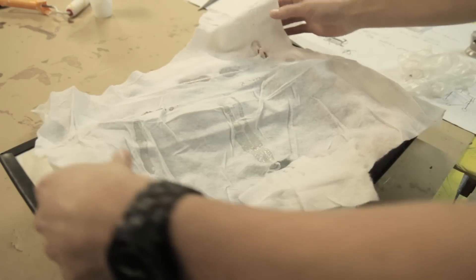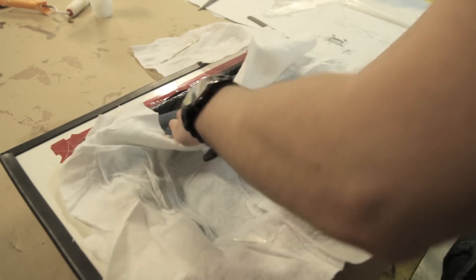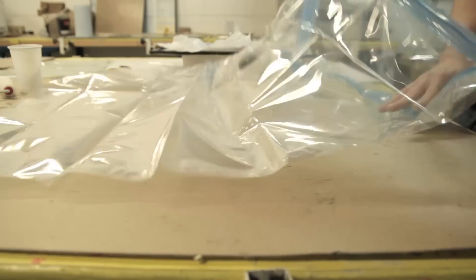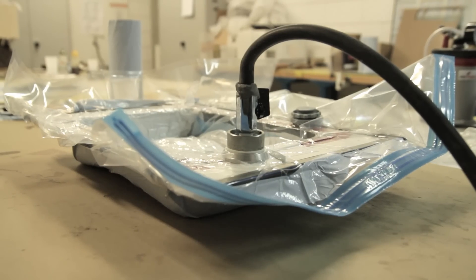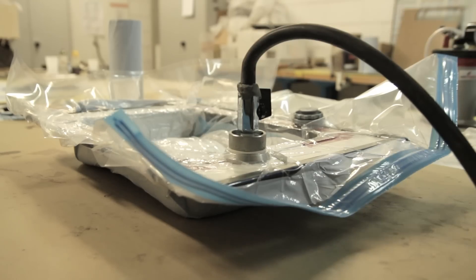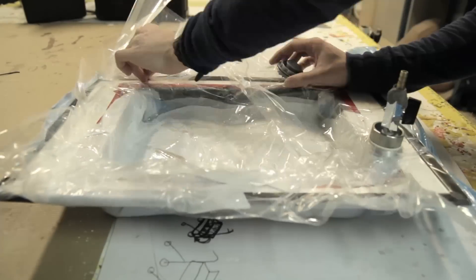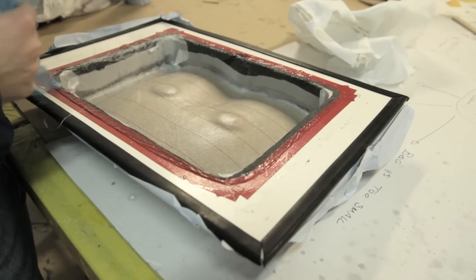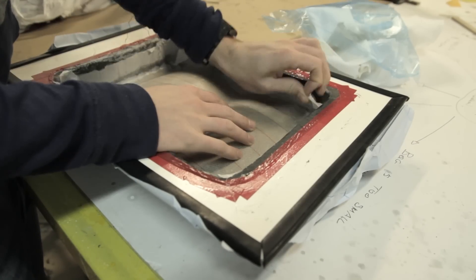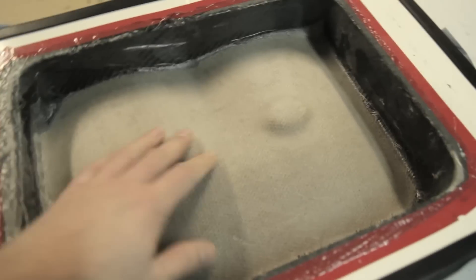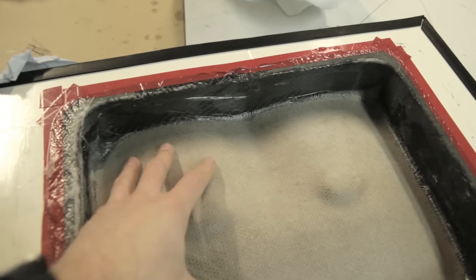Then I'm adding the peel ply, perforated film, and breather. If all of this is a bit too complicated for you, don't worry - this is just like you would do some regular vacuum bagging. Everything will go under vacuum again, then I can remove it out of the bag, remove the perforated film and peel ply, and I'm left with a sealed honeycomb in between the carbon fiber and fiberglass on top.